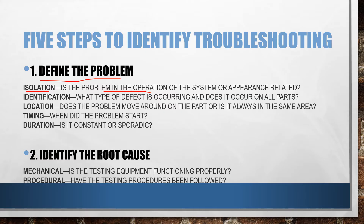How can we identify troubleshooting? The first step is to define the problem. Defining the problem characterizes it by answering several questions. First is isolation — is the problem in the operation of the system or is it appearance-related? Second is identification — what type of defect is occurring, and does it occur on all parts or is it appearing on several parts?